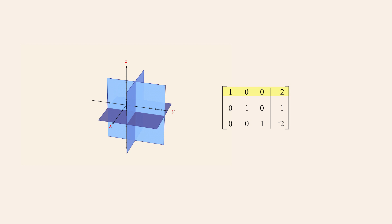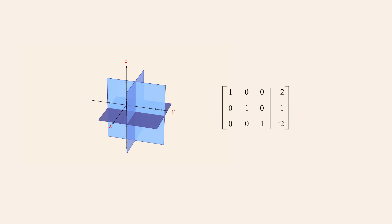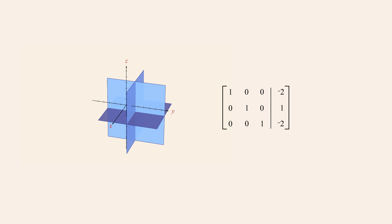Since plane one is now perpendicular to the x-axis, plane two is perpendicular to the y-axis, and plane three is perpendicular to the z-axis, the equations for those planes allow us to directly read off the values for the variables x, y, and z.